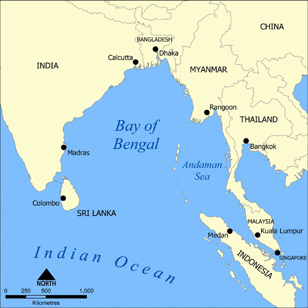Coastal regions bordering the Bay of Bengal are rich in minerals. Sri Lanka, also known as Sarandib or Ratna Dweepa meaning gem island, yields amethyst, beryl, ruby, sapphire, topaz, and garnet. Garnet and other precious gems are also found in abundance in the Indian states of Odisha and Andhra Pradesh.